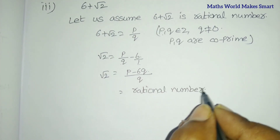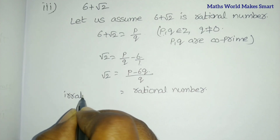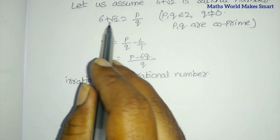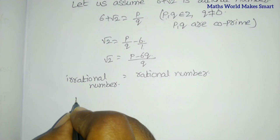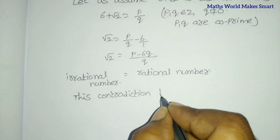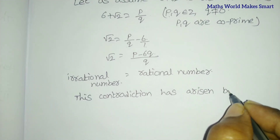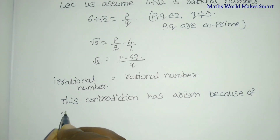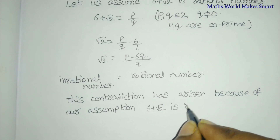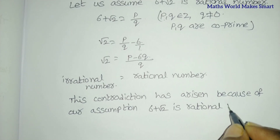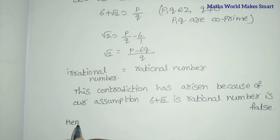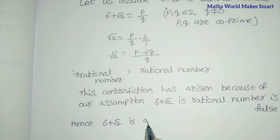But root 2 is an irrational number, as already proved. So we have a rational number equal to an irrational number — this is a contradiction. This contradiction has arisen because of our assumption that 6 plus root 2 is rational, which is false. Hence, 6 plus root 2 is an irrational number.